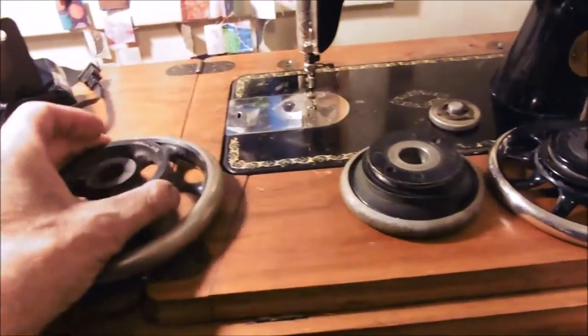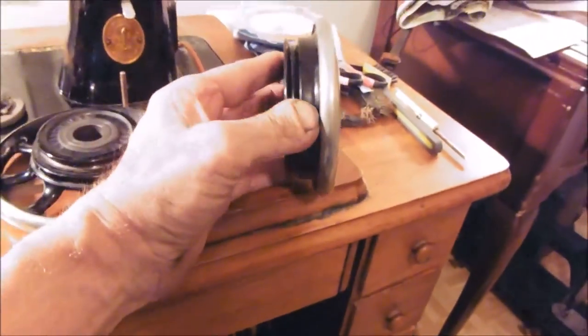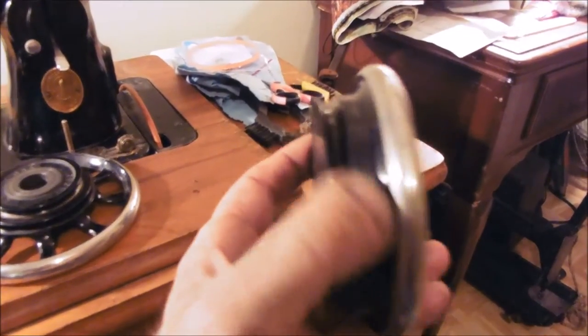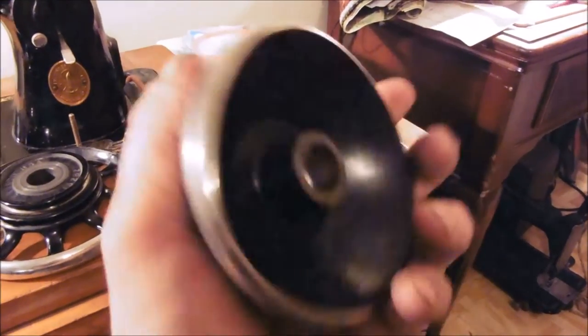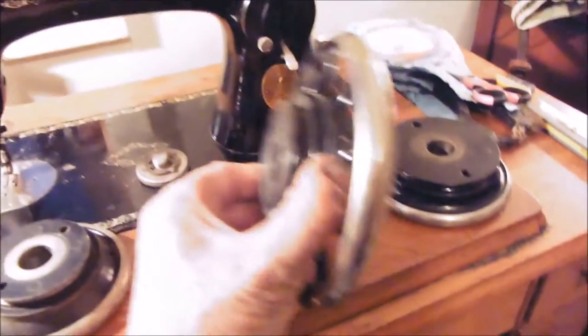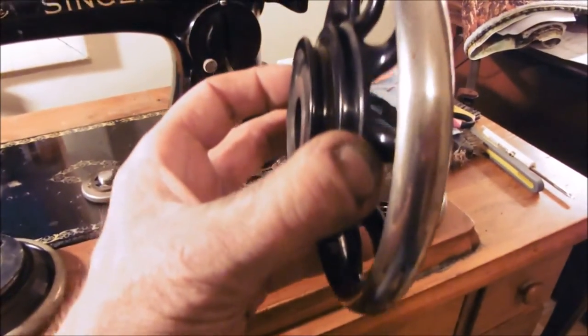Okay, this is the standard electric Singer wheel on older Singers - 1950s, 1940s, probably 1930s, 20s. This is what came if you bought an electric one. This was the wheel. If you bought a treadle, this was the wheel. It was a spoke wheel, easy to get a hold of, start and stop, run your machine.